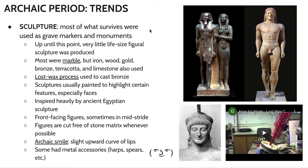Sculptures were usually painted to highlight certain features, especially faces and hair. Of course, over the course of thousands of years that paint has since worn away, but there are still traces left — you can see some traces of red paint in the sculpture's hair here. During the Archaic period, we're seeing mostly front-facing figures, sometimes in this pharaoh pose in mid-stride. I brought up Menkaure and Khamerernebty from the Egypt unit to show the similarities between these figures in terms of their stance and poses.